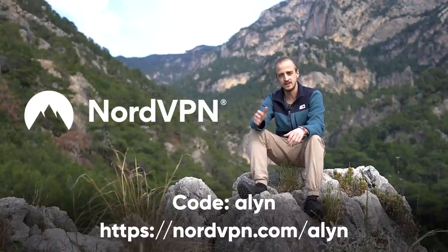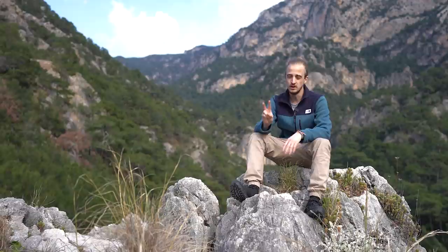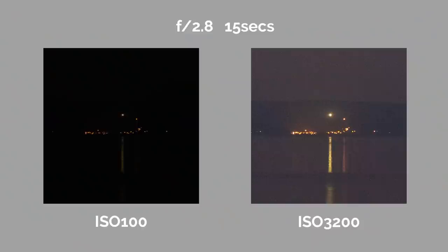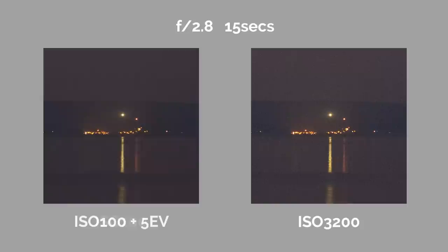So what is ISO invariance? Let's pretend we have a perfectly ISO invariant camera and we take two images at f2.8, 15 seconds, but with different ISOs — ISO 100 and ISO 3200. If we take the ISO 100 image in post-production and boost the exposure by five EV or five stops, the two images will look pretty much identical. They'll have the same amount of noise and it'll be impossible to tell which was taken at ISO 3200 and which at ISO 100.